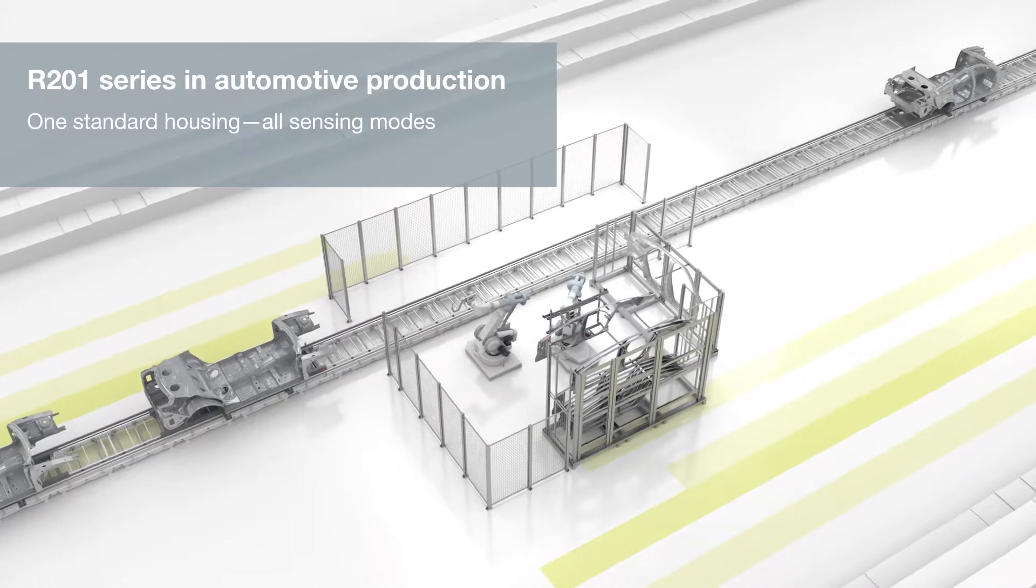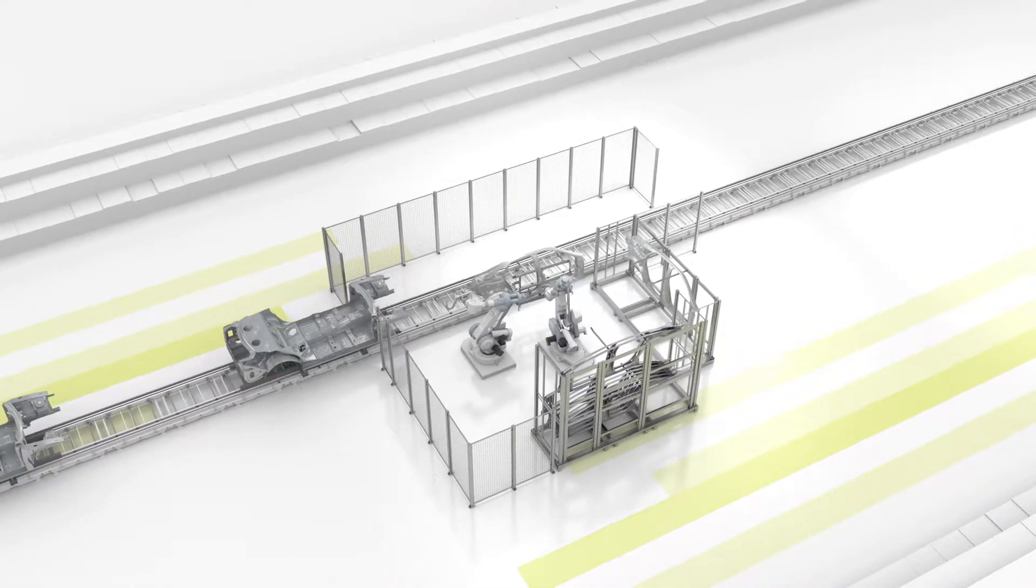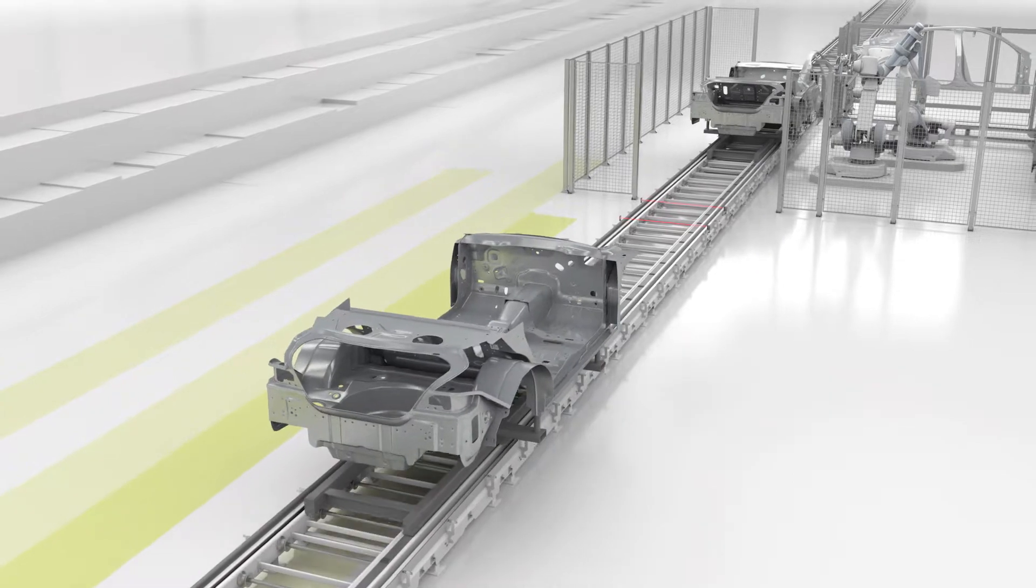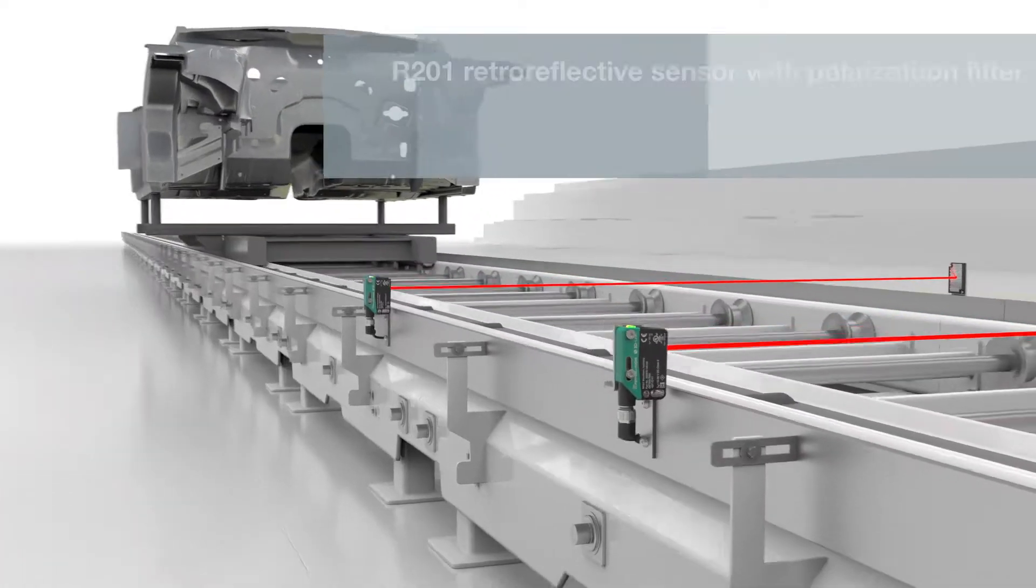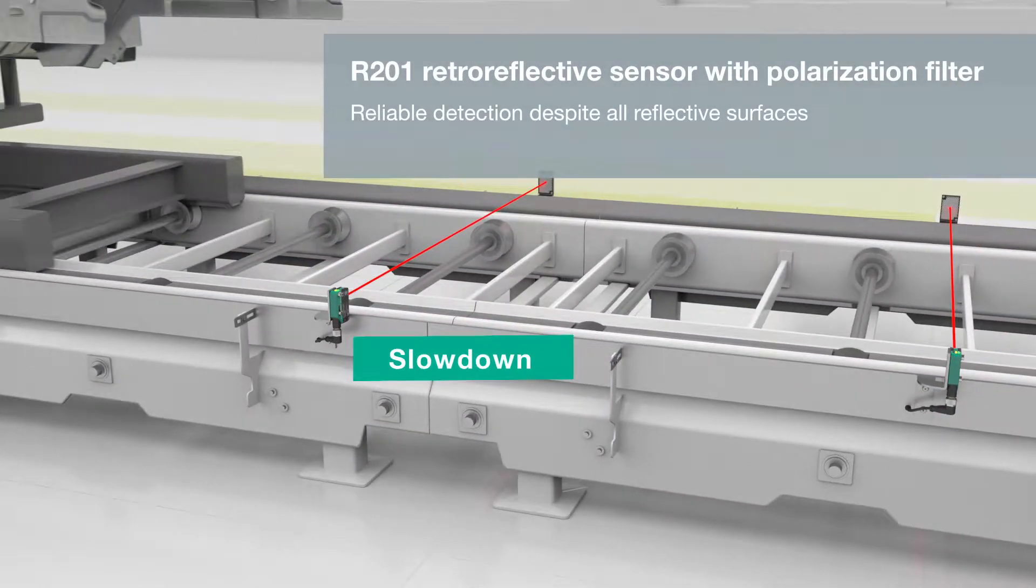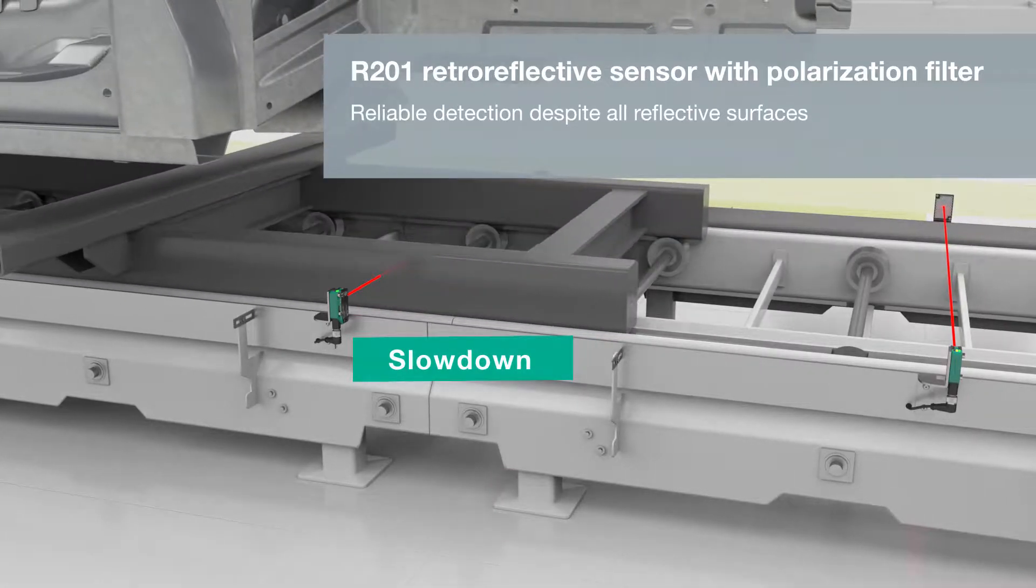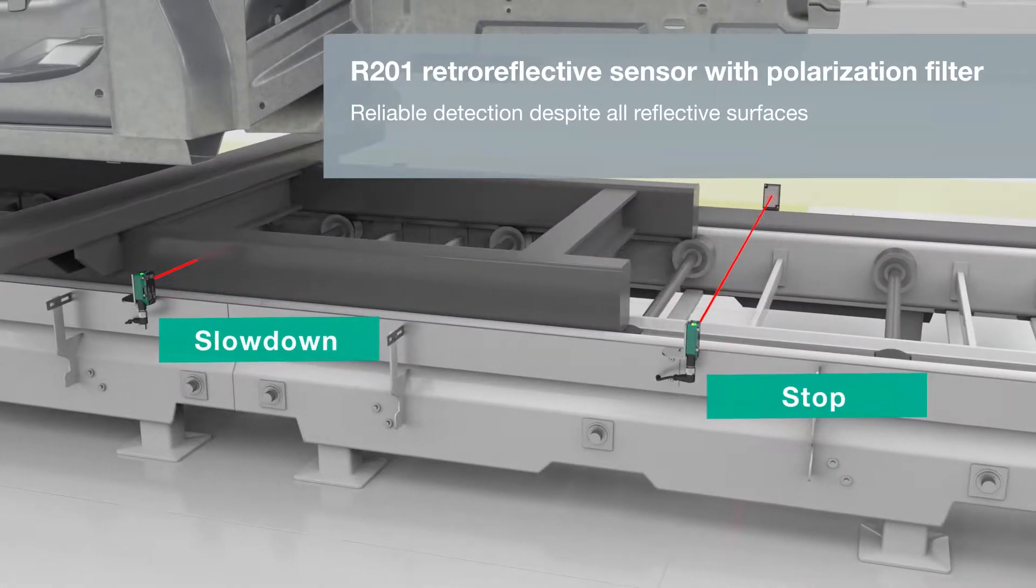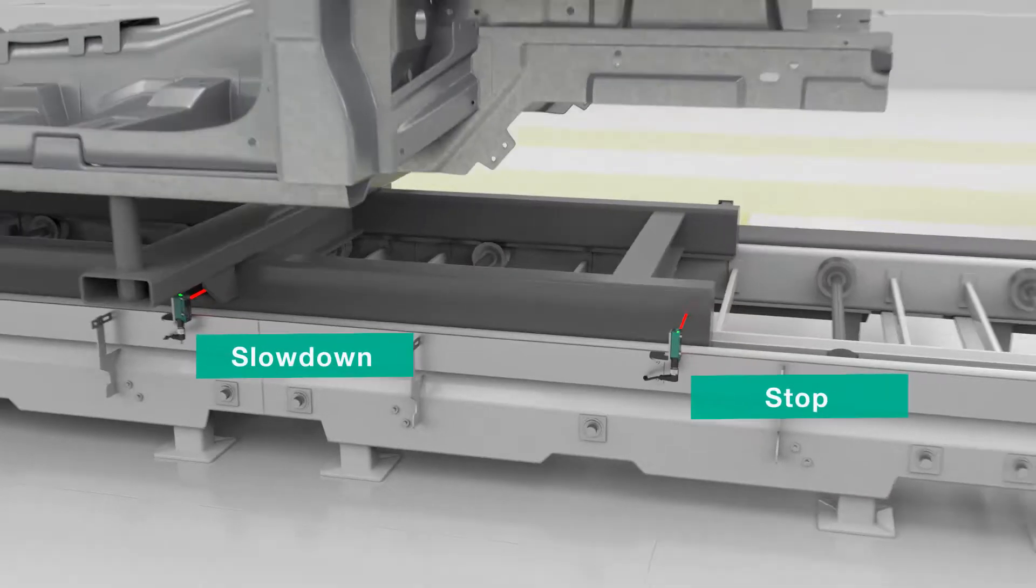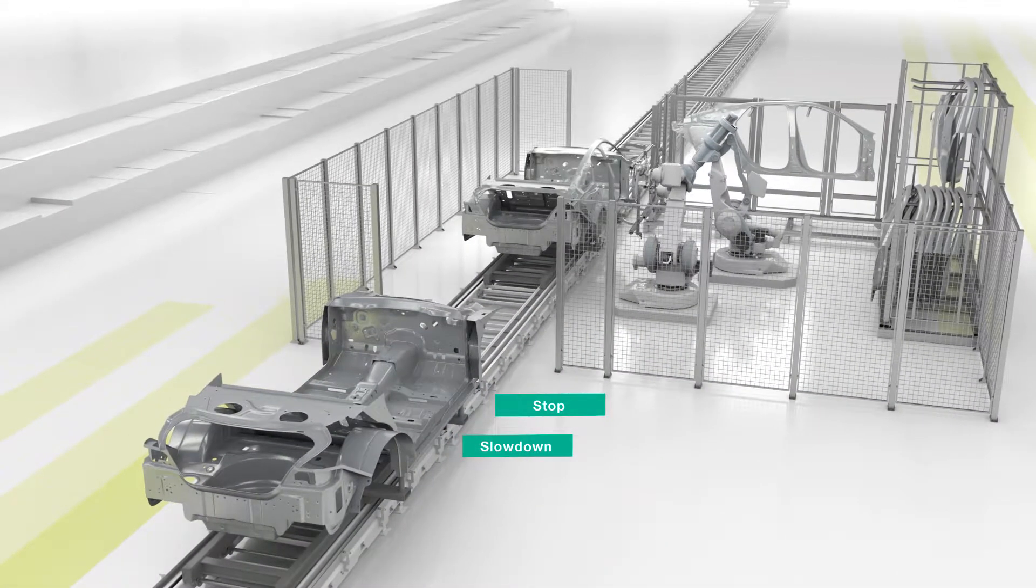The R201 series, for example, are suitable for a wide range of applications in automotive production. During the coordinated delivery of skids, reliable position detection is deciding. With the R201 series retro-reflective sensors, even very shiny parts are reliably detected.